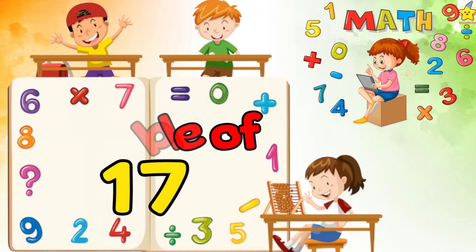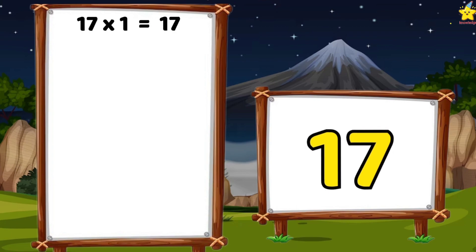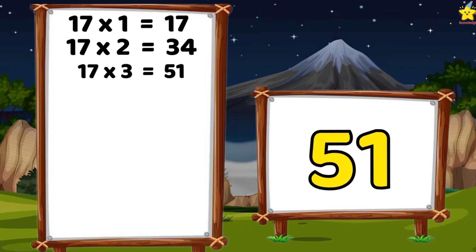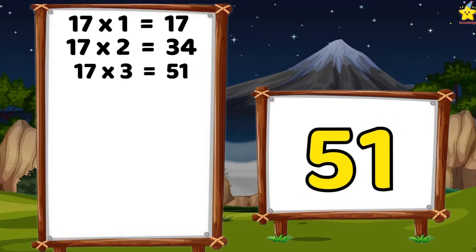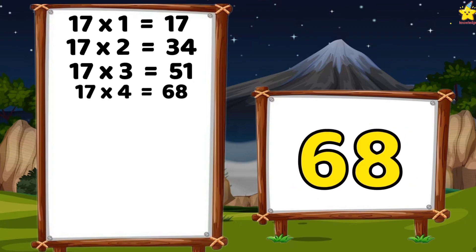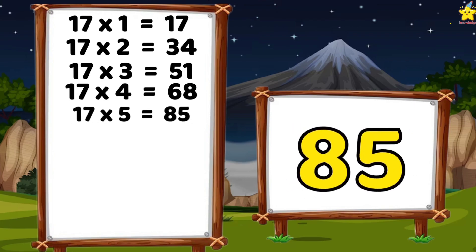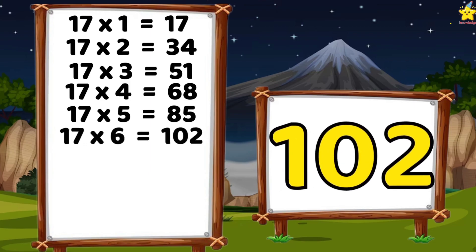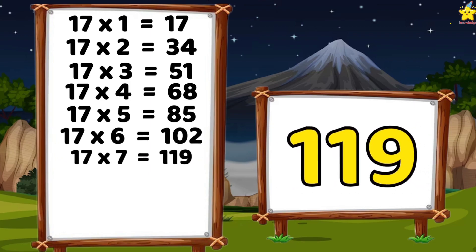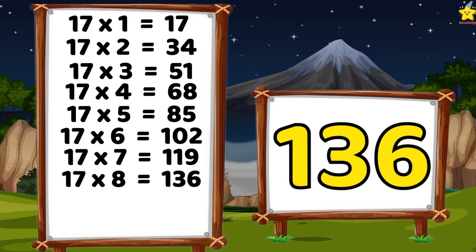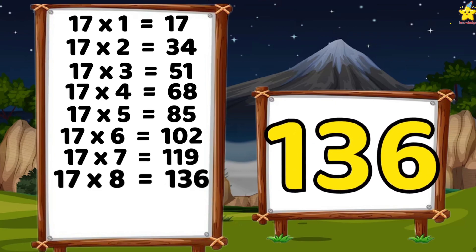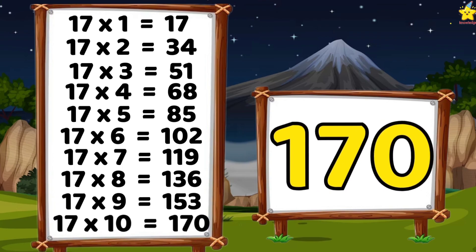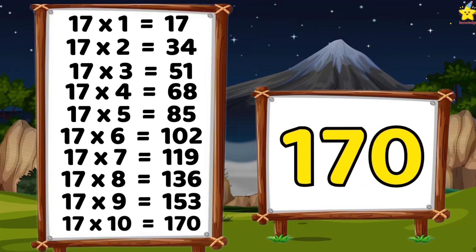Table of seventeen. 17 ones are 17. 17 twos are 34. 17 threes are 51. 17 fours are 68. 17 fifths are 85. 17 sixes are 102. 17 sevens are 119. 17 eights are 136. 17 nines are 153. 17 tens are 170.